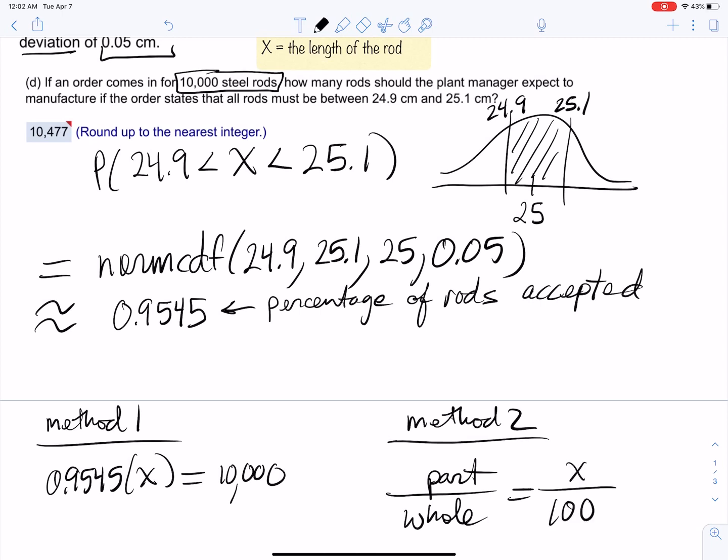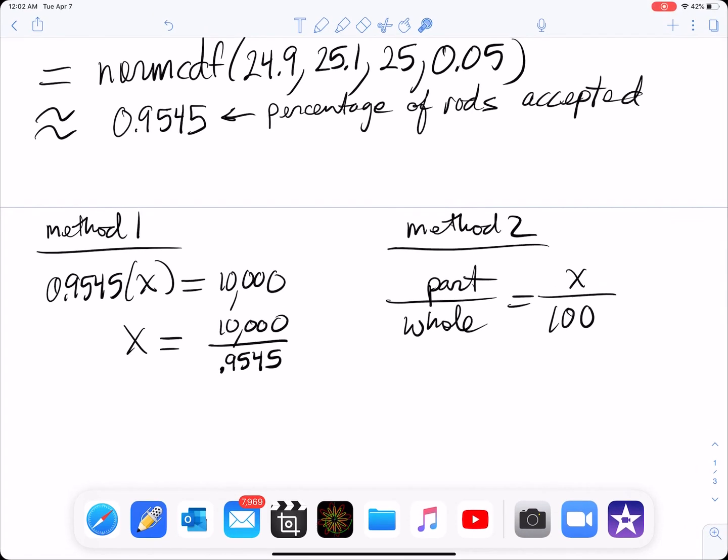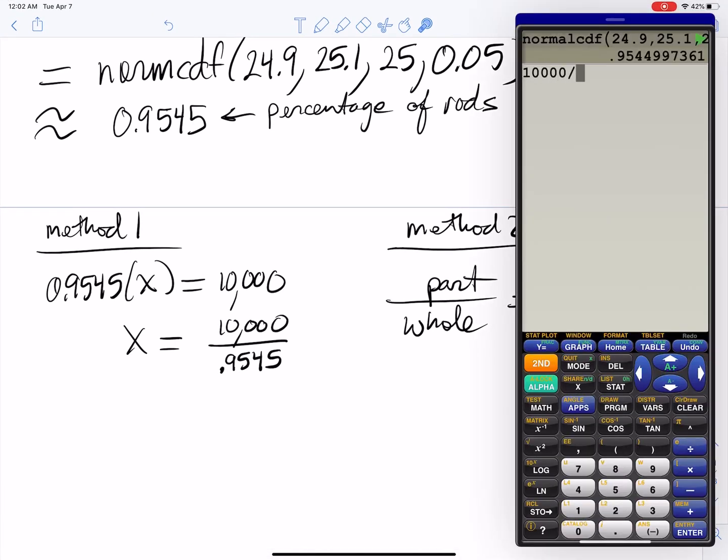Method 1 is straightforward: X equals 10,000 divided by 0.9545. I need to be pretty accurate and precise here. If I round this to like 0.95, I'm probably going to get the wrong answer. 10,000 divided by 0.9545 gives you 10,476. But if I do 10,000 divided by 0.95, I get 10,526. That's a big difference just because you round it differently.